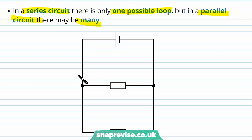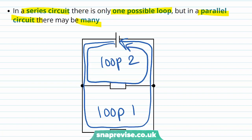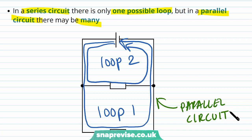In a parallel circuit there may be many loops. One loop goes along one junction — that's loop one — and loop two goes along the other junction. A parallel circuit has more than one route for the current. When applying Kirchhoff's second law, the sum of the EMFs in a closed loop equals the sum of the potential differences in that same closed loop.